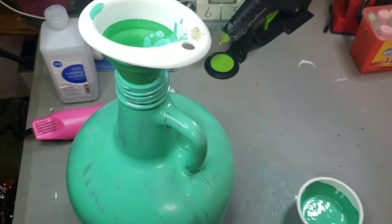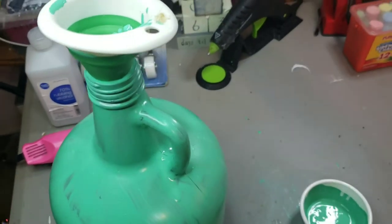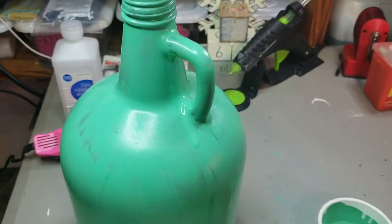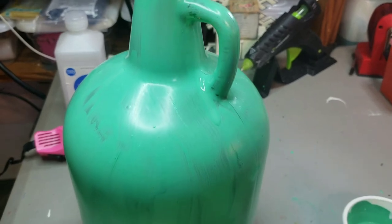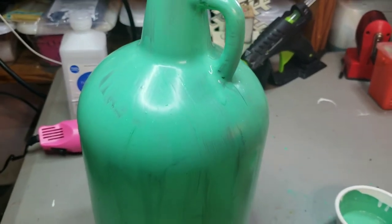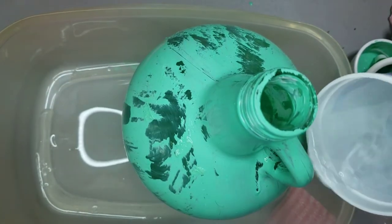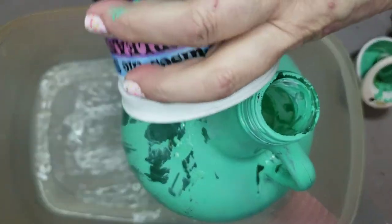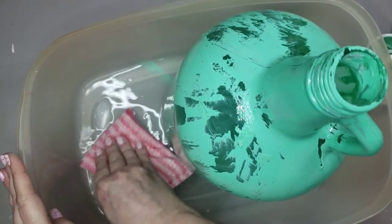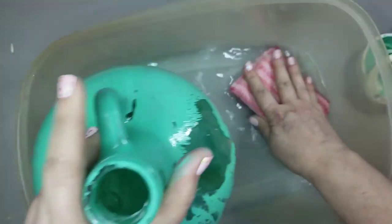What I did was took the remainder of the paint and Mod Podge I had mixed up poured it inside the bottle and I'm going to clean all of that on the outside. I set it over into a pan and just poured a cup of warm water over it and scrubbed it right off.